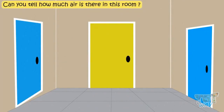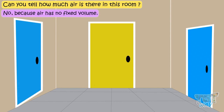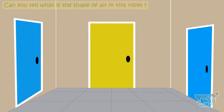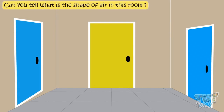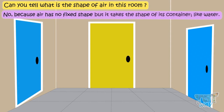Kids, can you tell how much air is there in this room? No, because air has no fixed volume. Now, can you tell what is the shape of air in this room? No — air has no fixed shape, but it takes the shape of its container, like water.